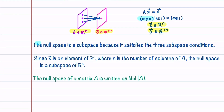The null space is a subspace because it satisfies the three subspace conditions: it contains the zero vector, it's closed under addition, and it's closed under scalar multiplication. Since x is an element of R^n, where n is the number of columns of A, the null space is a subspace of R^n. When we're working with the null space of a matrix, we write the null space as Nul(A).